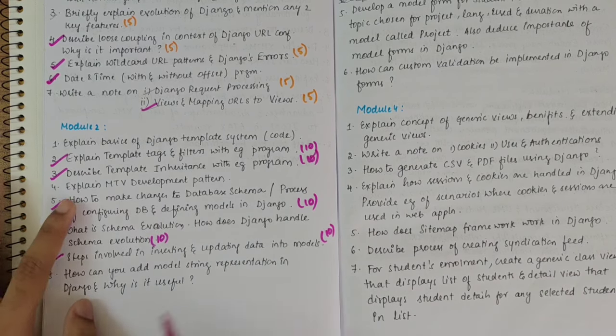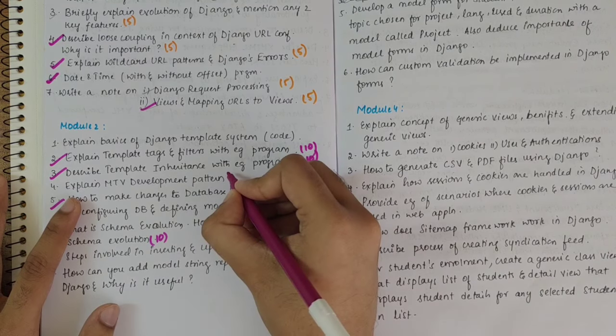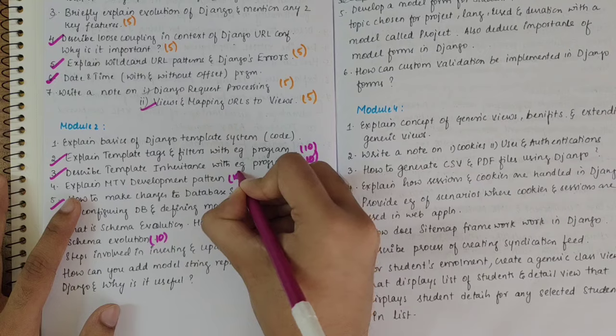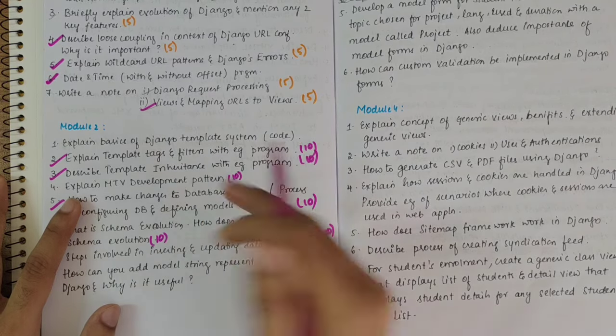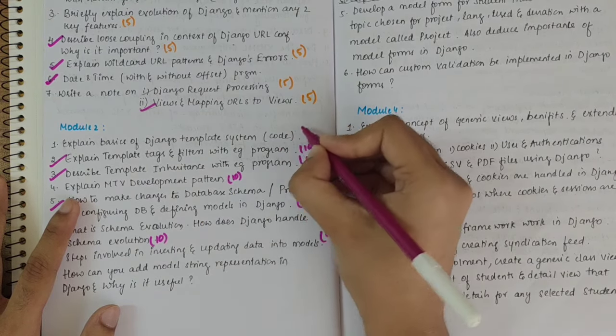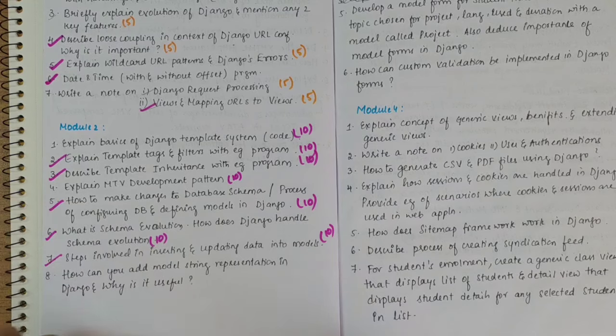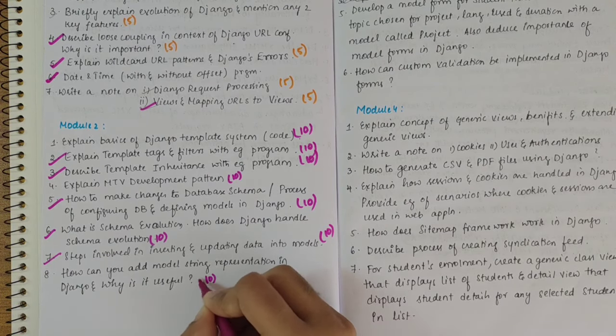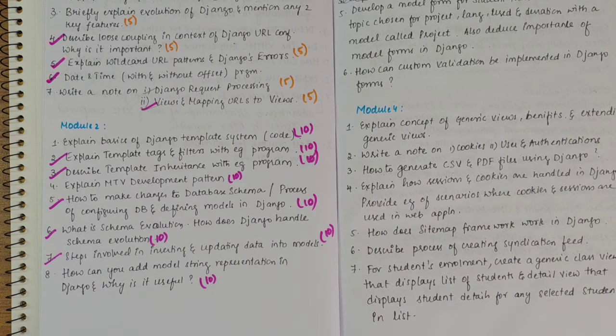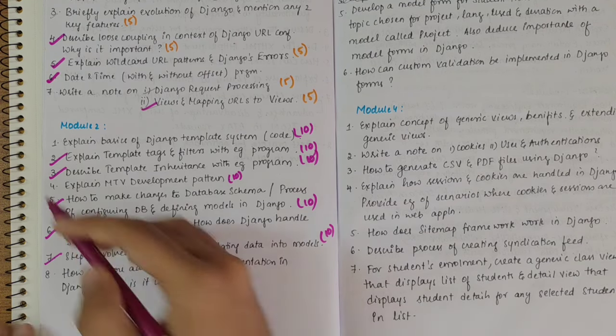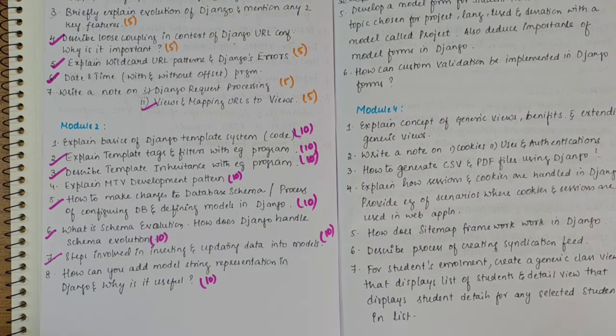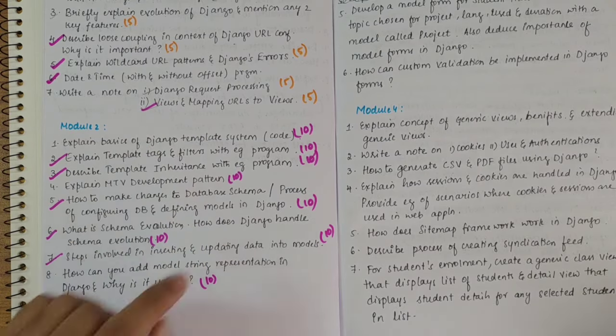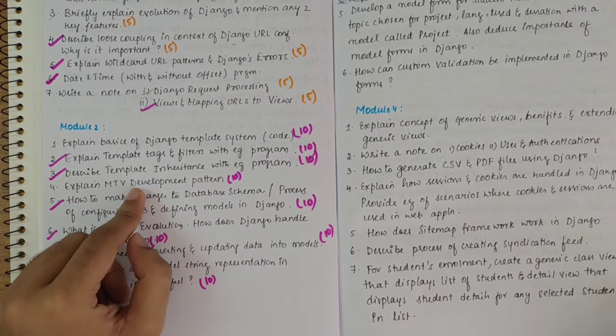Then we have MVC development, MTV development pattern. This could be 10 marks or 8 marks. Then basics of Django template system, 10 marks again. Then how can you add model string representation in Django? Why is it useful? Again, 10 marks. So out of these, if I have to say the ones which you cannot miss out at all are two, three, five, six and seven.